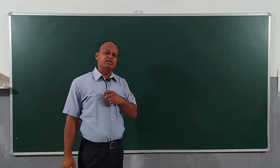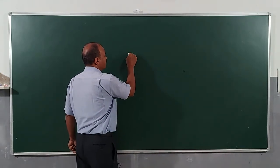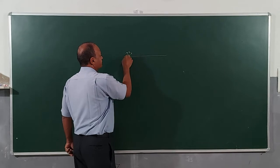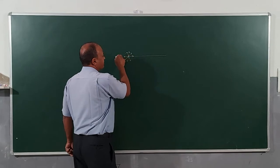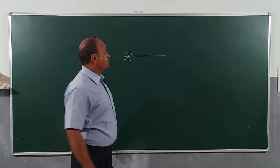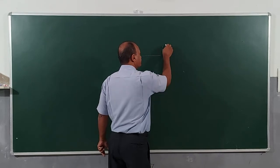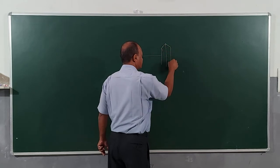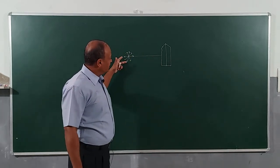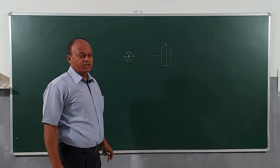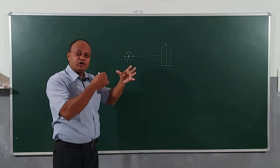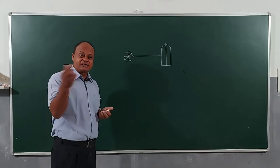Let us see one simple experiment. This is ordinary light coming out of a source. When I say ordinary light, it means it is containing vibrations in all possible directions. There are certain materials - for example, if you take a tourmaline crystal - this tourmaline crystal has a special property. If you switch on a bulb, the light will be scattered in all possible directions, meaning the electric field will be oscillating along all possible directions.